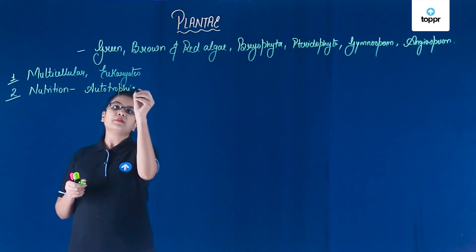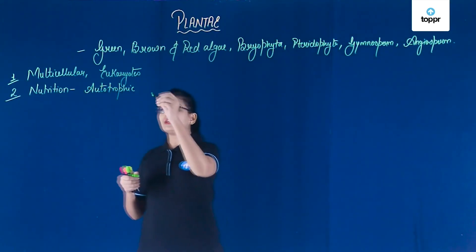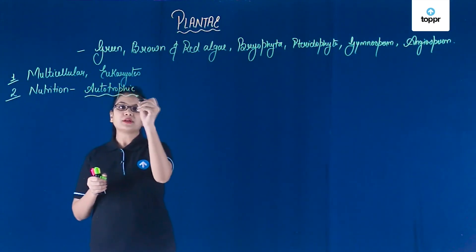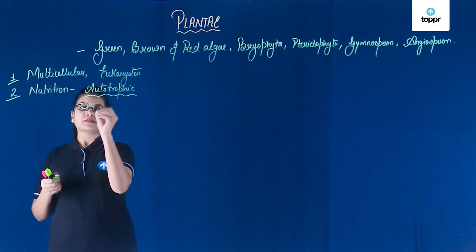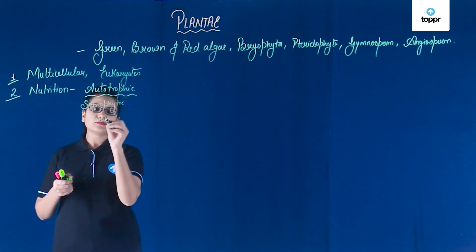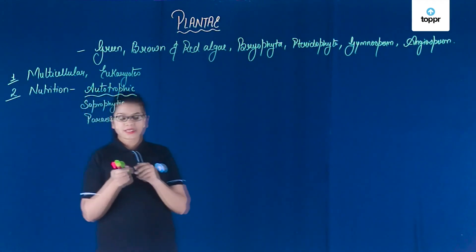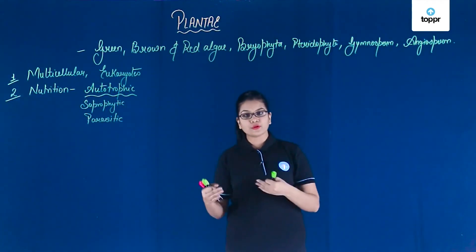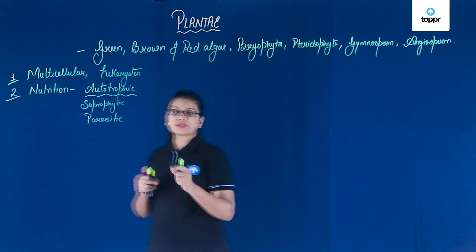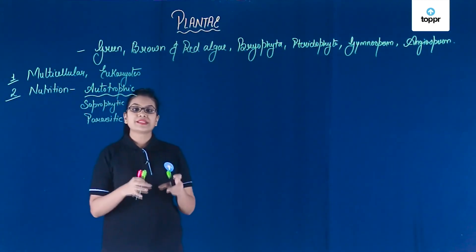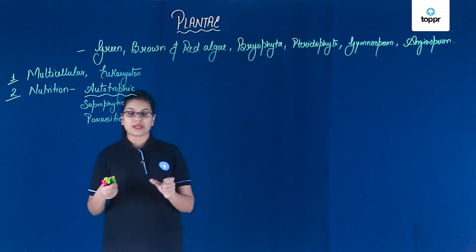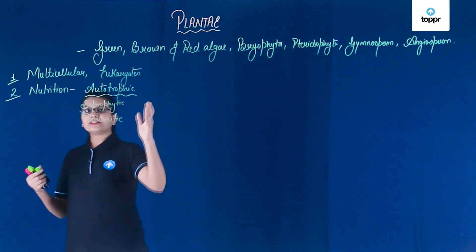Apart from being autotrophs, they are also somewhere heterotrophs. Usually the nutrition is autotrophic, but in some cases it can be saprophytic or parasitic. Parasitic plants cannot make their own food and are dependent upon other plants. Apart from these, there are some plants which can make their own food but cannot absorb basic nutrients, so they eat tiny insects and other organisms — these are called insectivorous or carnivorous plants.